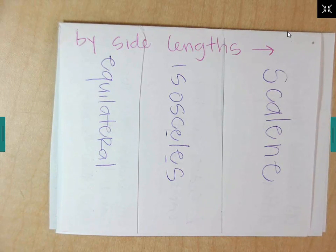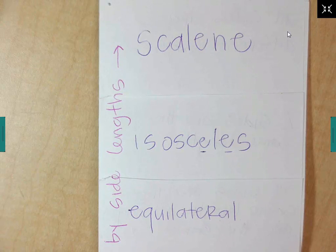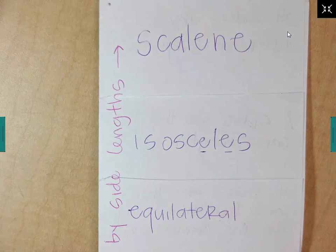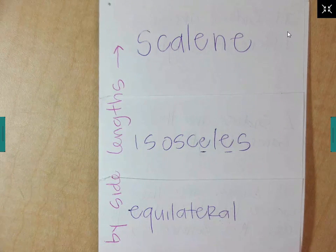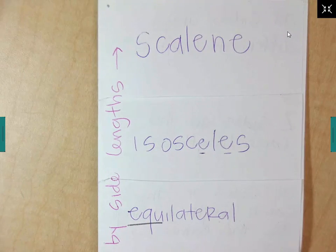Yes, we're going to go ahead and write these down. So every triangle can have two names to it. One name tells us how long the sides are. The other name tells us how big the angles are. This right here is looking at how long the sides of the triangle are. So we've got scalene, isosceles, and an equilateral. Those terms tell me about the lengths of the sides.